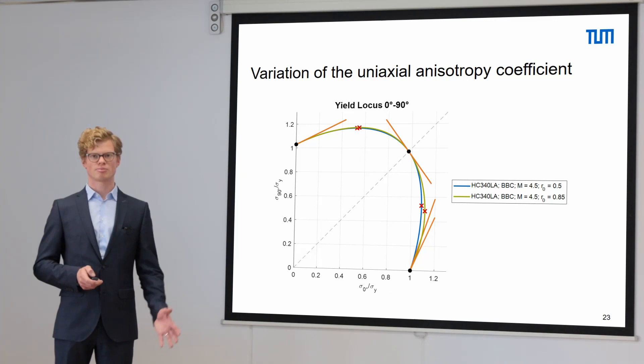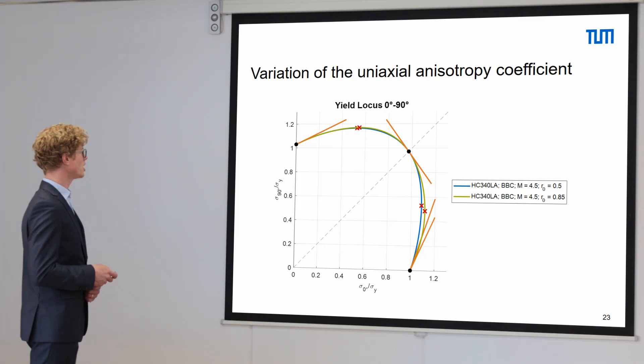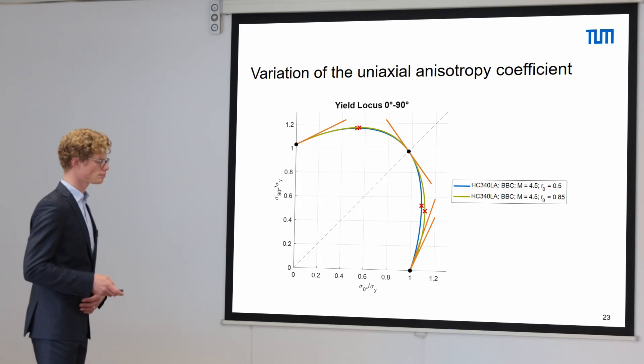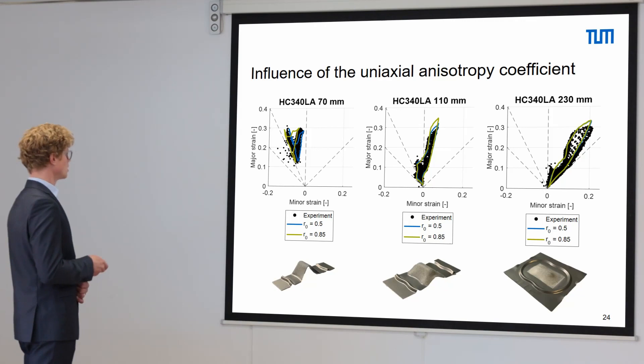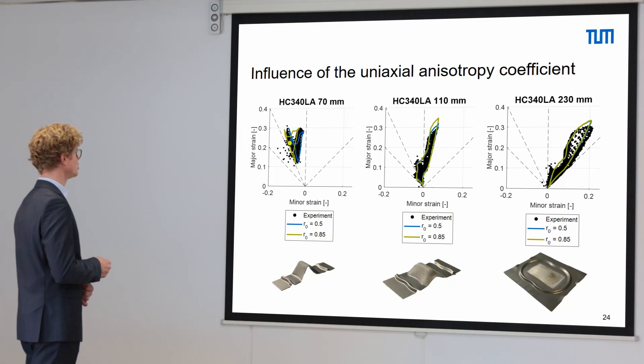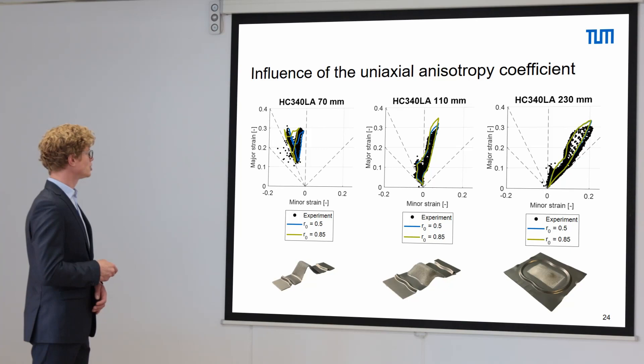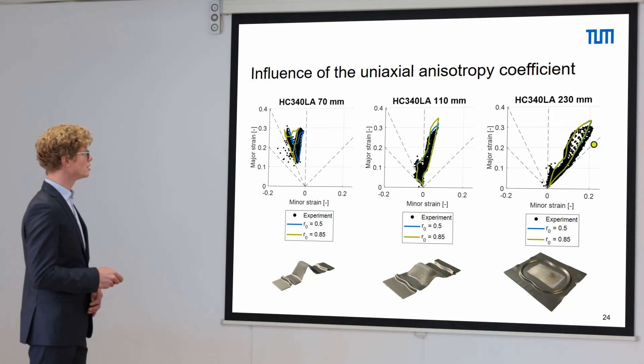The final parameter investigated is r0, the uniaxial anisotropy coefficient, which changes the slope of the yield locus in the uniaxial direction, with hardly any change visible in the biaxial direction. We changed the parameter from 0.5 to 0.85. For the 70 mm specimen we see a significant change in strain distribution in the form of a clockwise rotation when we change the r0 value. We see a slight change for the 110 mm specimen, and no change in the strain distribution for the 230 mm full specimen.